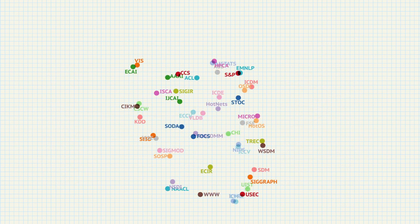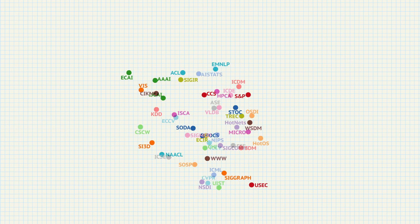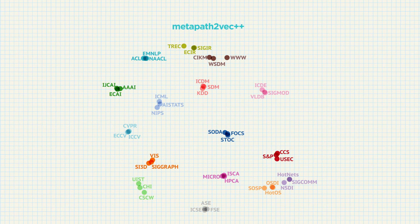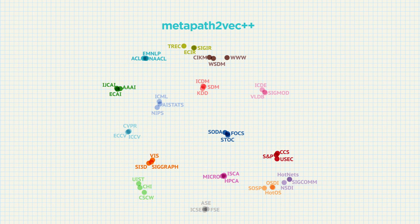Here's another example of 48 computer science venues, three each from 16 subfields. After mapping their latent representations learned by metapath2vec++ into a two-dimensional space, we can see that conferences from the same domain are grouped together, with each group well separated from the others. This demonstrates the powerful embedding ability of metapath2vec++. The heterogeneous embeddings can also reveal the similarities across different domains, including the core computer science cluster at the bottom right, covering topics such as theory, systems, architecture, security, and software.